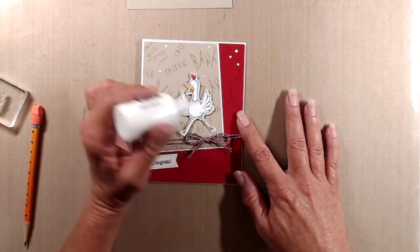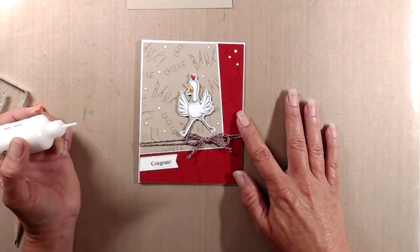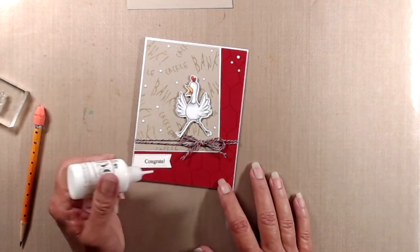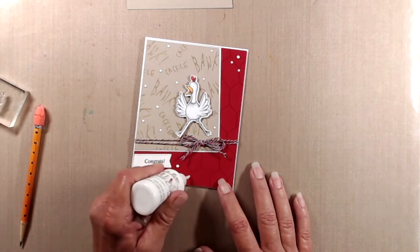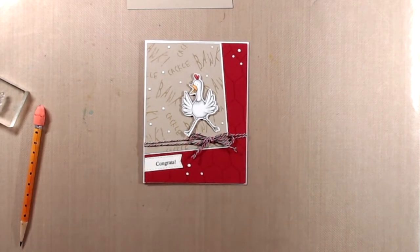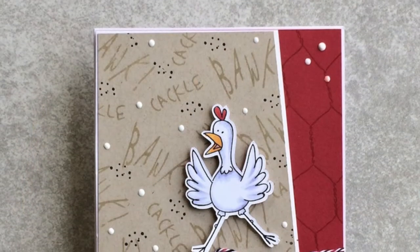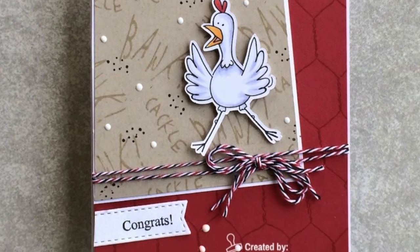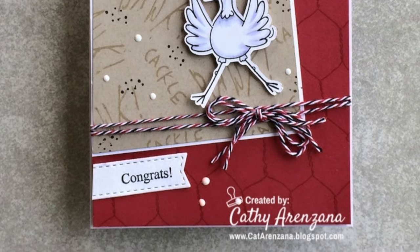After I was done with that I looked at it and thought it needed a little bit more texture. So off camera I had stamped the chicken feed stamp using VersaFine onyx black ink to randomly stamp on that sentiment background just to fill in a little bit more space. And that finishes up my first card.